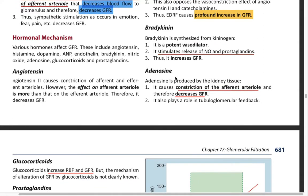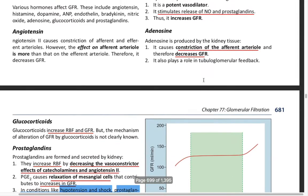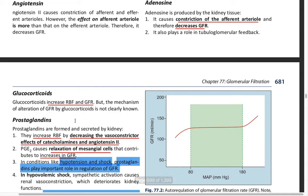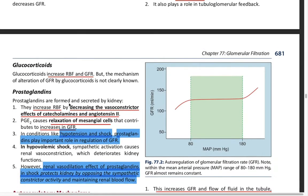Next is adenosine — it causes constriction of the afferent and efferent arterioles and therefore reduces the GFR. Glucocorticoids increase the RBF and the GFR.